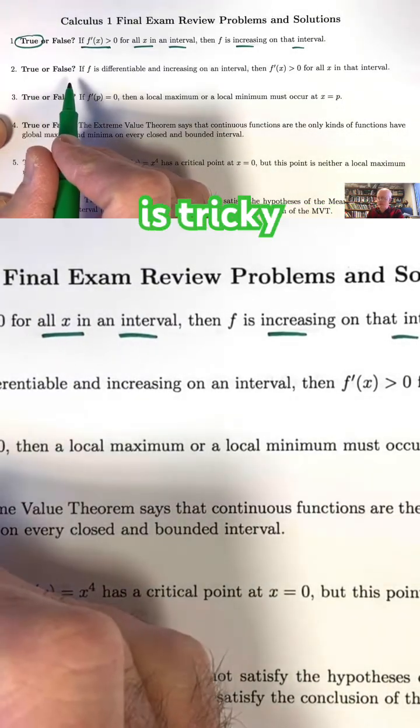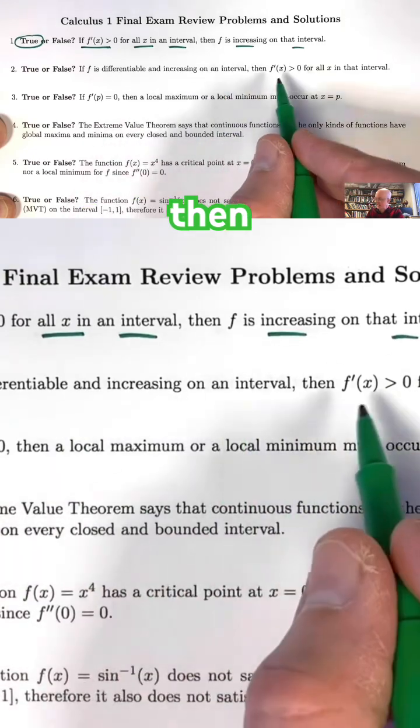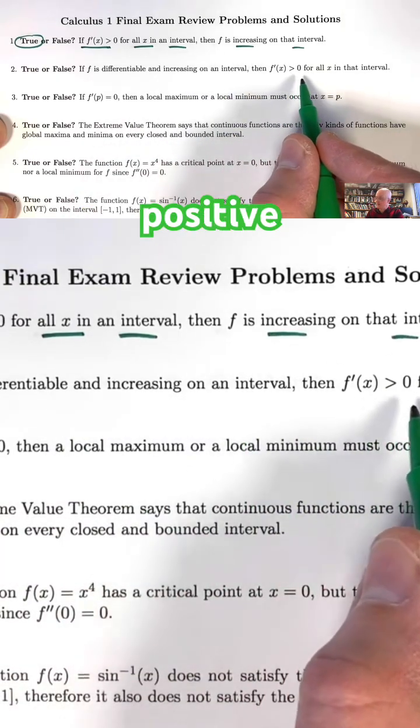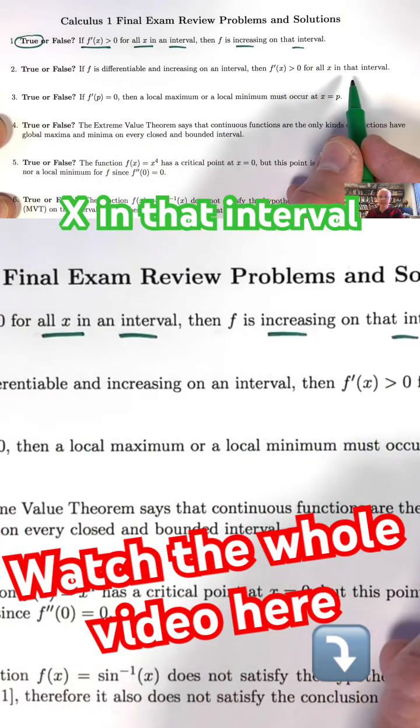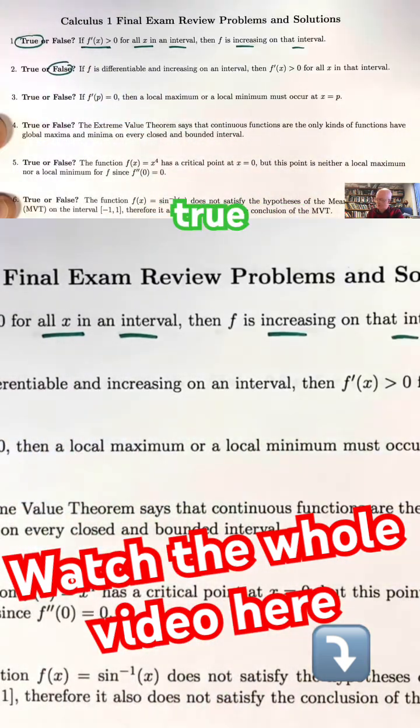Number two, this is tricky. If f is differentiable and increasing on the interval, then f prime of x is always positive for all x in that interval. That is actually false. It sounds true. It sounds true.